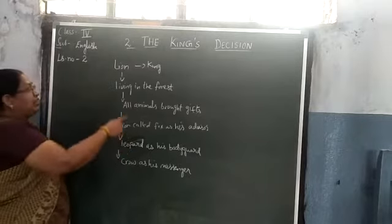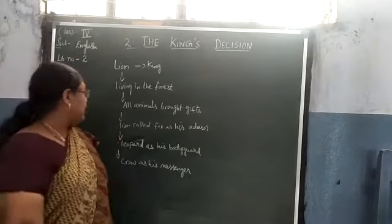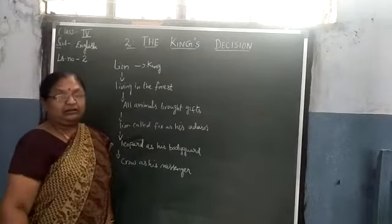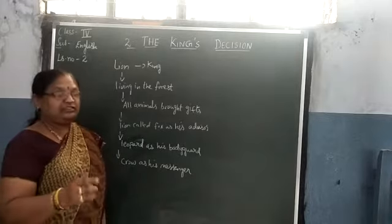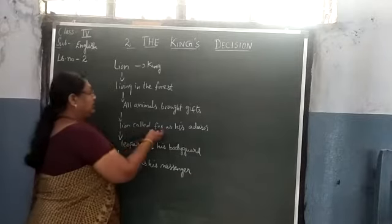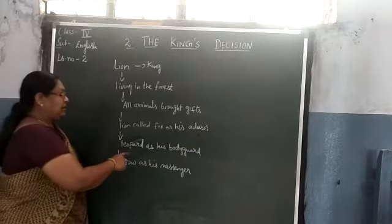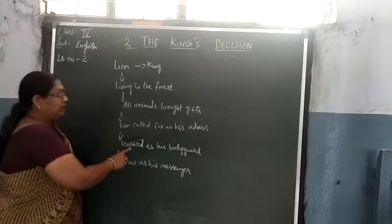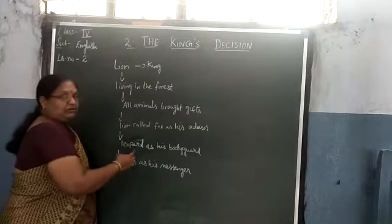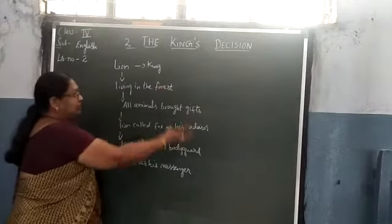Let us go into detail. All animals are bringing gifts to the lion. So, all animals are in a group. The lion called the fox first and appointed him as an advisor. Next, the lion called the leopard and appointed him as his bodyguard. Next, the lion called the crow and appointed him as his messenger.